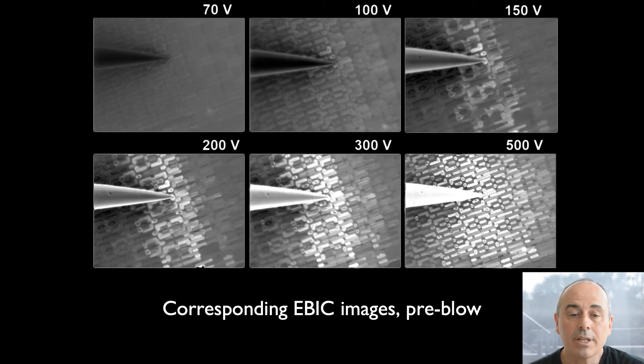The next set of images are the corresponding EBIC images. While we hardly see anything at 70 V, the EBIC signal from the contacted gate and the neighboring gate show up. At 150 V and 200 V, we already clearly see all transistor contacts that share the same well light up. And at 500 V, we can also see contacts from neighboring wells. One comment regarding the measured EBIC currents. At 100 V, the differences between the maximum and minimum current is only about 30 picoamps.